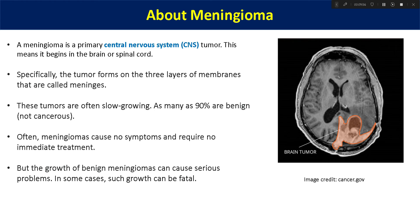Next is meningioma. Meningioma is a primary central nervous system tumor because it begins in the brain or spinal cord, directly affecting our spinal cord. This tumor forms on the three layers of membranes called meninges. These tumors are often slow growing and mostly non-cancerous — in 90% of cases they are benign. Most of the time they cause no symptoms and require no immediate treatment. However, growth of benign meningiomas can cause serious problems, and in some cases they can also grow into fatal or malignant tumors.